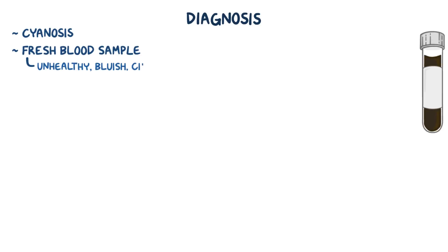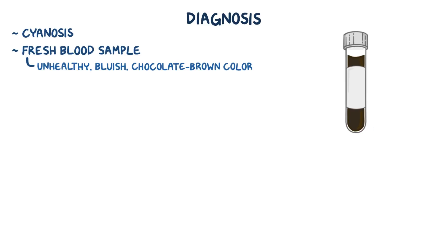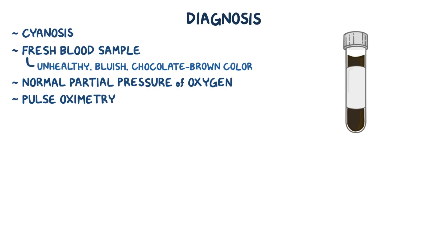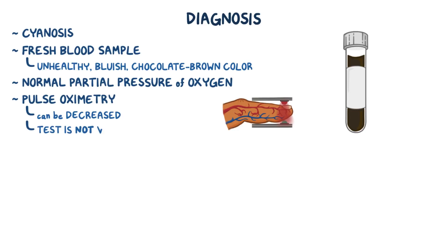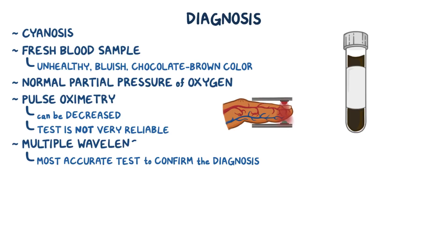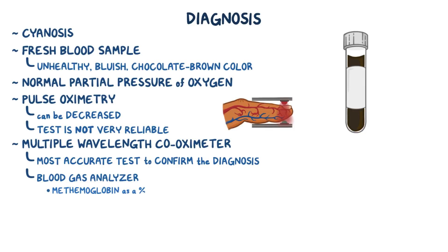As for diagnosis, people with methemoglobinemia will often have cyanosis. A fresh blood sample will show a characteristic bluish chocolate brown color instead of the normal healthy red. They have normal partial pressure of oxygen, which means there's a normal amount of oxygen in the blood. Pulse oximetry can be decreased, but this test is not very reliable. The most accurate test to confirm the diagnosis is a multiple wavelength co-oximeter, which is a blood gas analyzer that measures methemoglobin as a percentage of the total hemoglobin concentration in the blood sample.